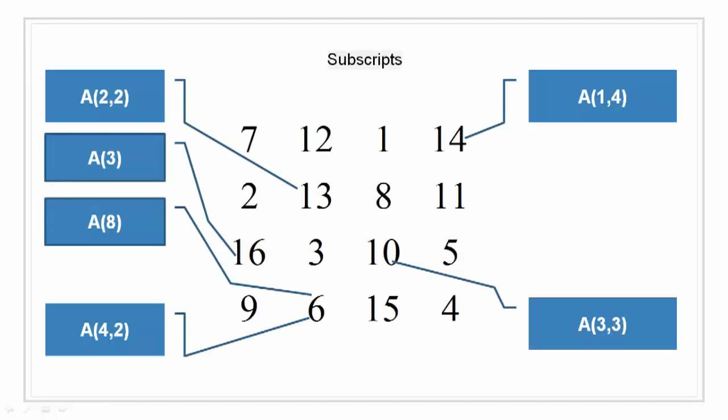Subscripts: The element in row i and column j of a matrix A is denoted by A(i,j). For example, A(4,2) is the number in the fourth row and second column, which is 6. A(2,2) is 13, A(1,4) is 14, and A(3,3) is 10.